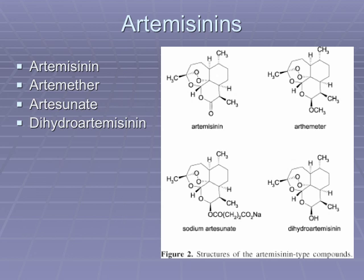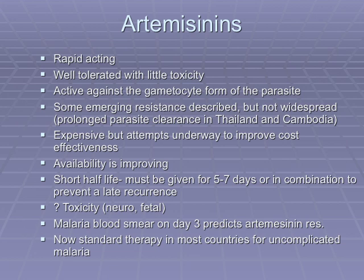There are four artemisinins: artemisinin, artemether, artesunate, and dihydroartemisinin. Of these, artesunate is the only one available IV, giving it certain advantages. The artemisinins started as an ancient herbal remedy in China; the active ingredient was purified in 1972, with Chinese trials in the late 1970s. They were extensively used in China in the 1980s and other Asian countries in the 1990s. These drugs are very rapidly acting, active against the gametocyte form of the parasite where other therapies are not, and well tolerated with very little toxicity. They have a short half-life, so they're usually given in combination with a second drug that has a longer half-life to preserve resistance and prolong the anti-malarial effect.